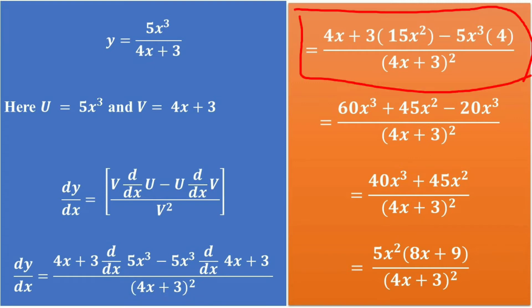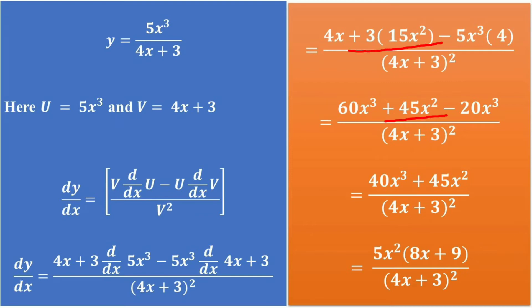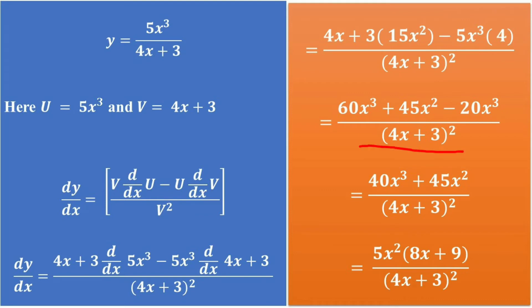Which equals (4x + 3) times the derivative of 5x³, which is 15x², minus 5x³ times the derivative of (4x + 3), which is 4, divided by (4x + 3) squared. Expanding: 4x times 15x² = 60x³, and 3 times 15x² = 45x², minus 5x³ times 4 = 20x³, divided by (4x + 3) squared.